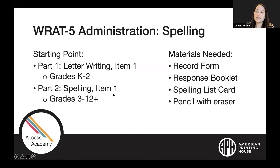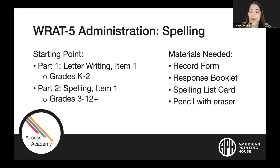For the spelling subtest, the rules are similar. If you have an individual in grades K through two, you administer part one — letter writing — and then continue to part two — spelling — following the discontinuation rule of five incorrect responses. Regardless, if you're administering part one and part two for a younger learner, you want to make sure you continue into part two, similar to the word reading subtest.